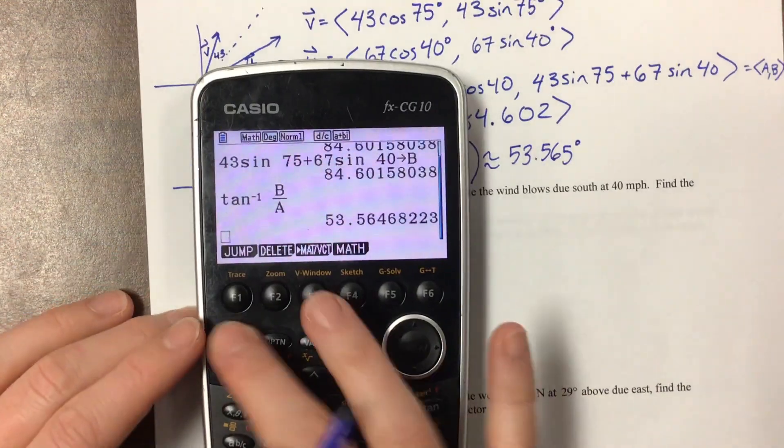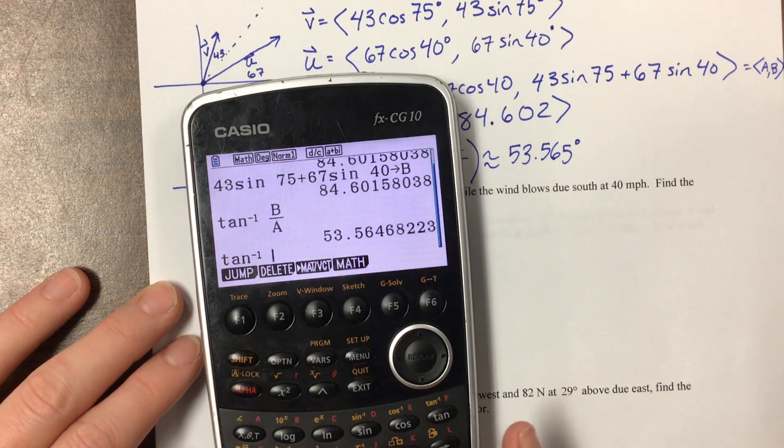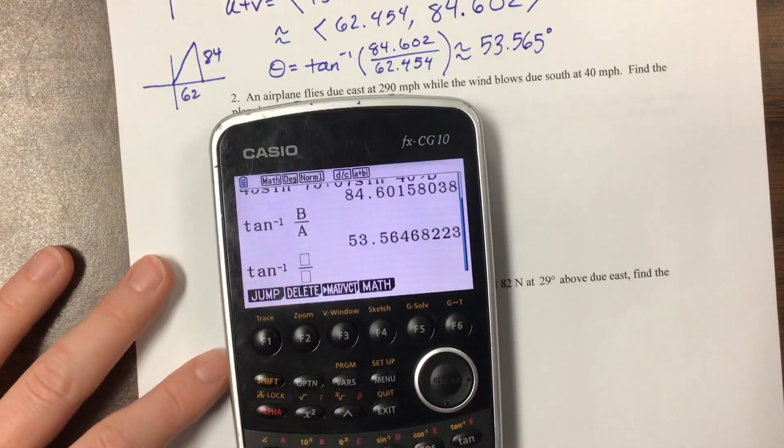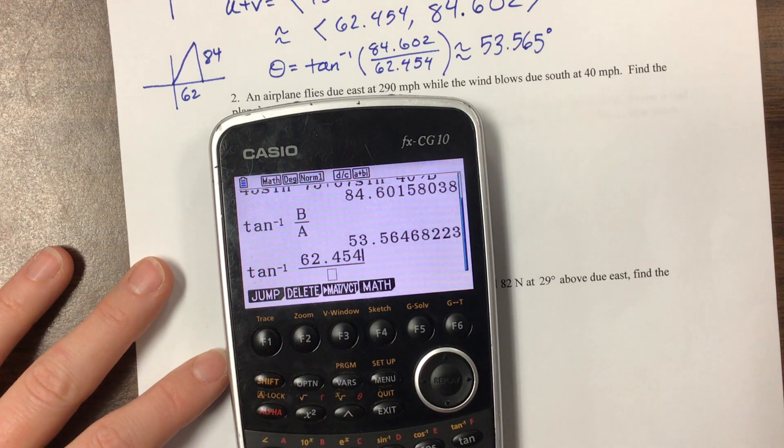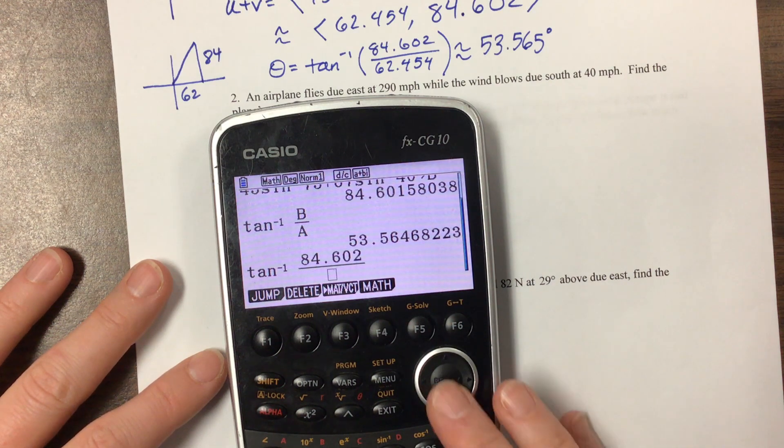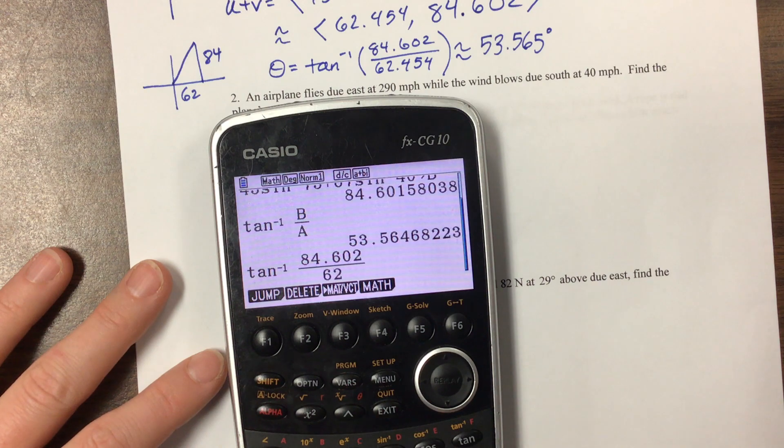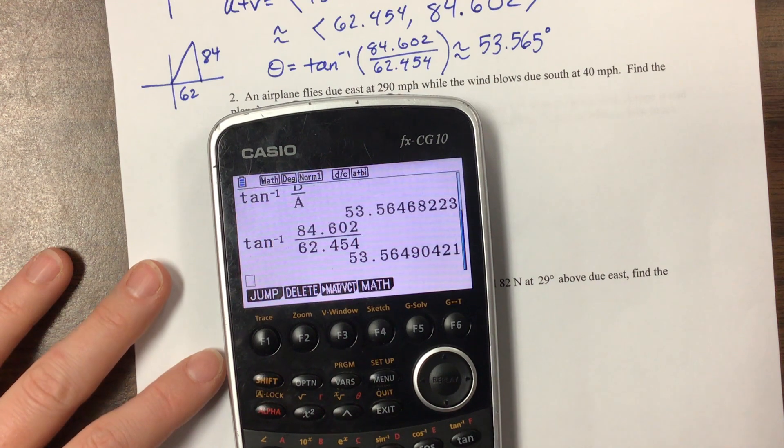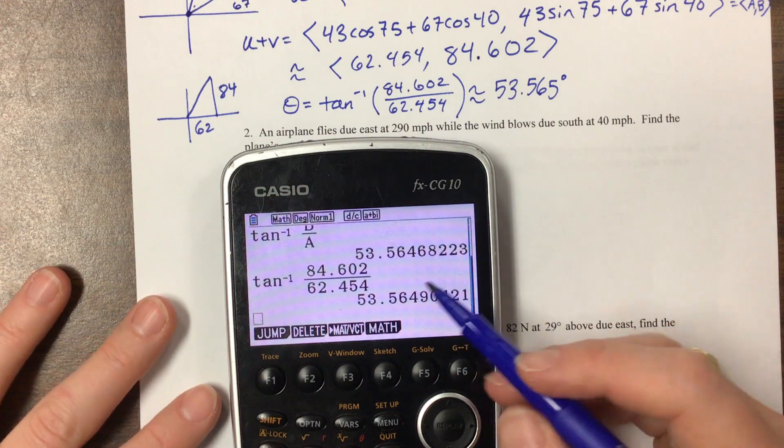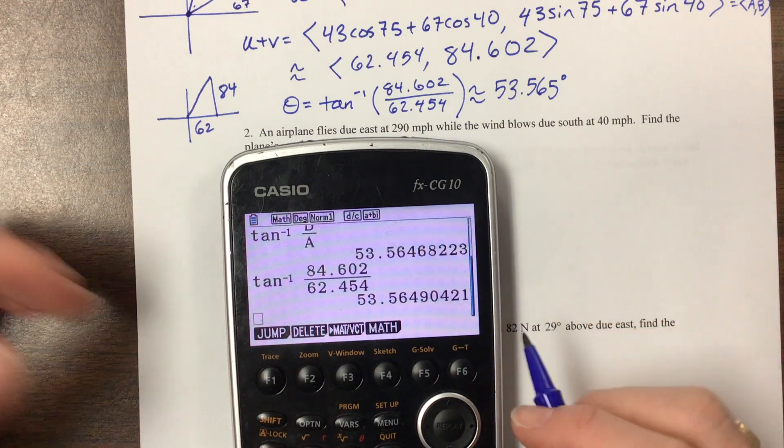If I had done inverse tangent of what I had rounded, I think I'm going to be pretty close. Let's see if we rounded the same thing. Oh, I did that backwards. My bad. I put the X over Y. That's wrong. That's Y over X. I was just making sure you were paying attention. Right? Okay. So notice they rounded the same. They're not exactly the same, but when we round to three sig figs, you're fine.